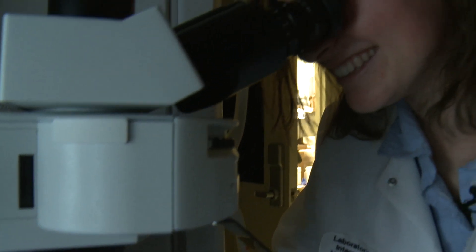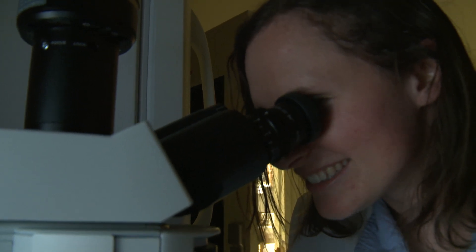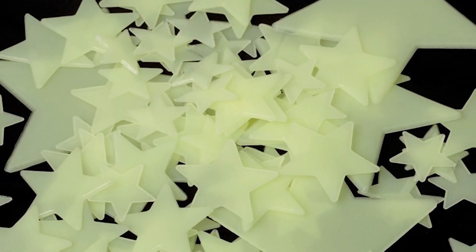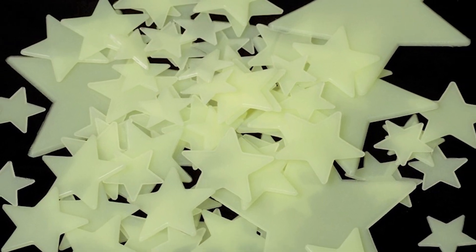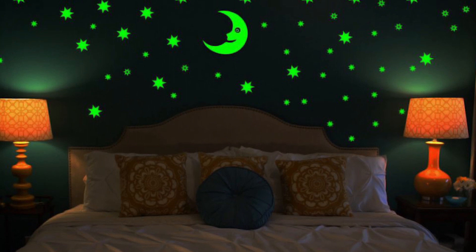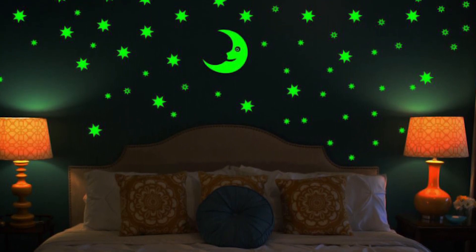For microscopy, we use fluorescent microscopy, which is basically glow in the dark. Like when you turn off the lights in one of those rooms with the stars on the ceiling, that's kind of the same thing because it glows without the light actually being on. And so the molecules that we have that we're attaching are fluorescent.